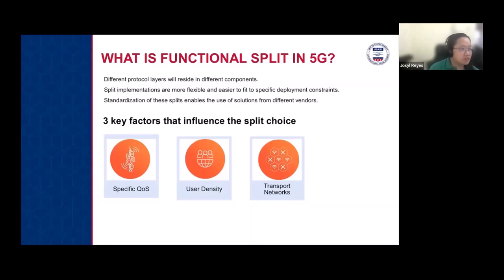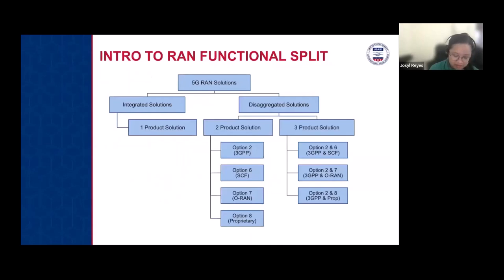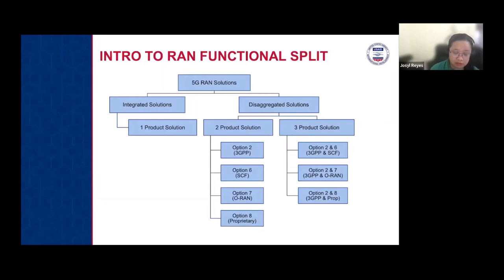The different functional splits will be discussed in later parts of this course. In general, the different split options for the disaggregated solution include options 2, 6, 7, 8, and combinations such as 2 and 6. The discussion will cover how we split the different operations of the BBU and decide which part can be implemented or deployed.